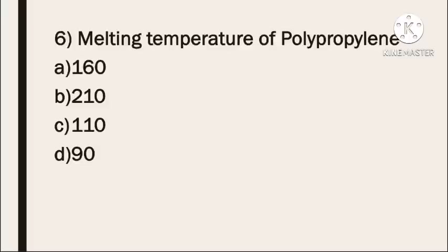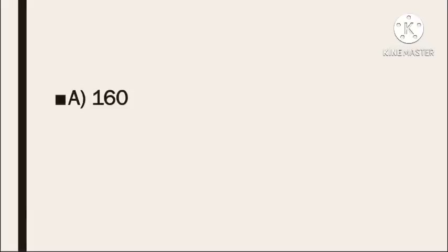Next question: what is the melting temperature of polypropylene? Option A: 160. Option B: 210. Option C: 110. Option D: 90. The correct answer is 160°C — that is the melting temperature of polypropylene.